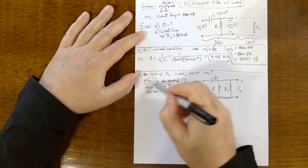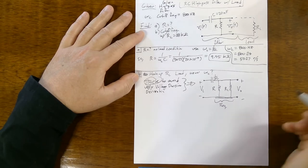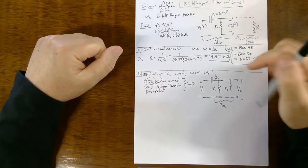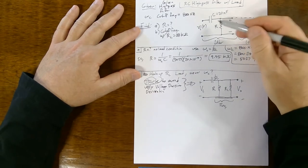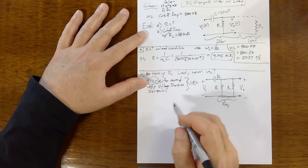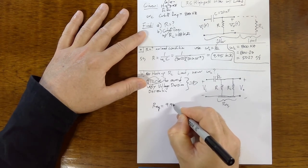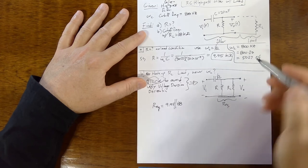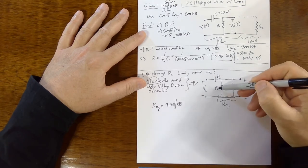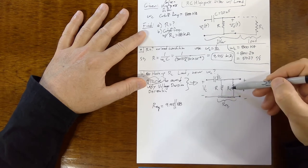The trick is to realize that these guys, we could just call these guys R equivalent and just view it as one resistor. So it doesn't change the filter stuff, doesn't change the equations. R equivalent is just 9.95 in parallel with 68, these two resistors, the 9.95 kilohm resistor in parallel with the 68 kilohm resistor. This is 8.68 kilohms.